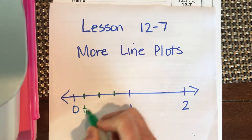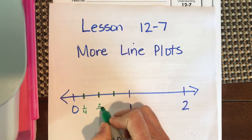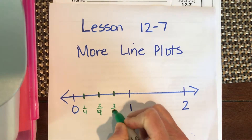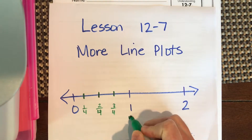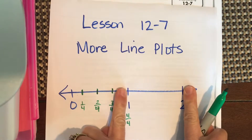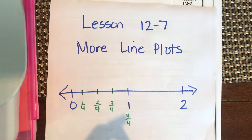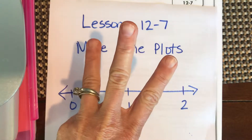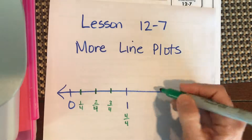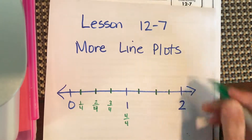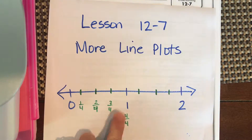This is one-fourth, two-fourths, three-fourths, and four-fourths. Then between whole number one and whole number two we do the same thing — we keep the denominator the same, keeping it in fourths, so we draw three lines there too.